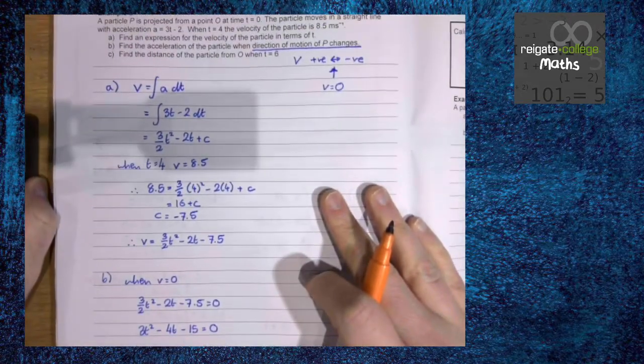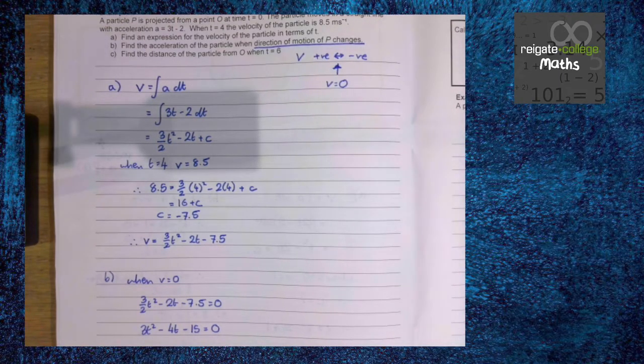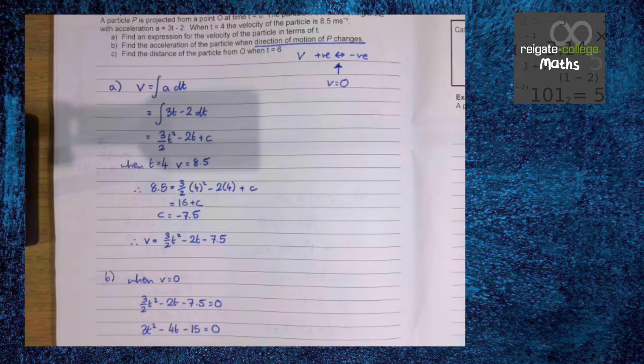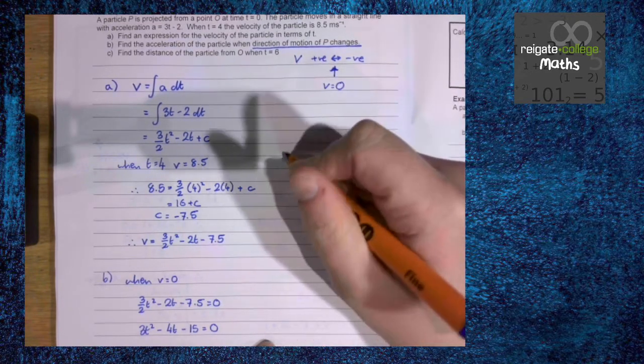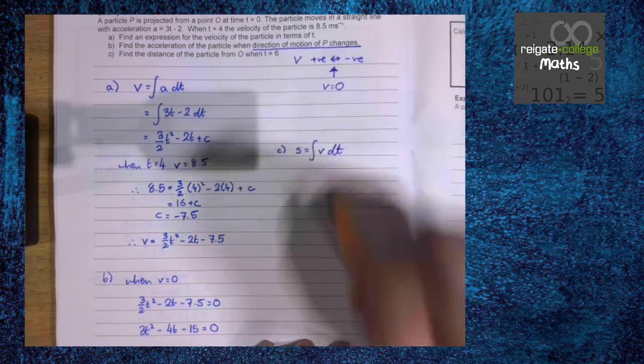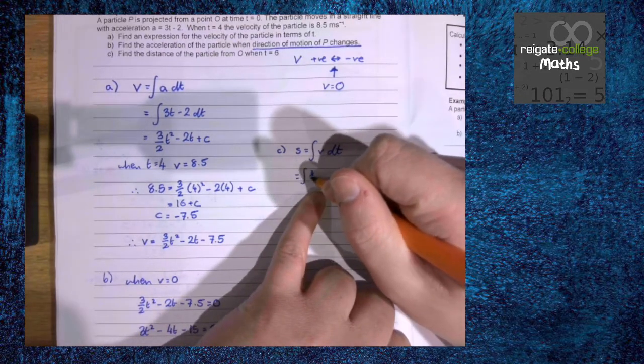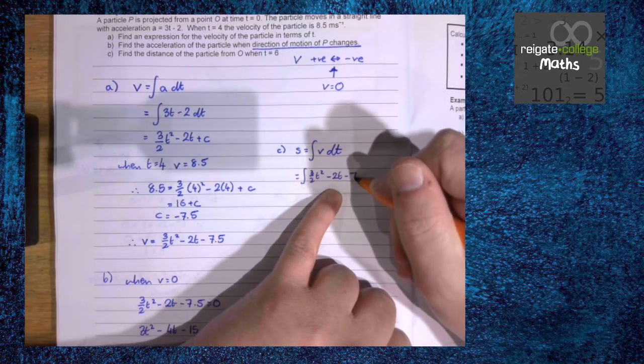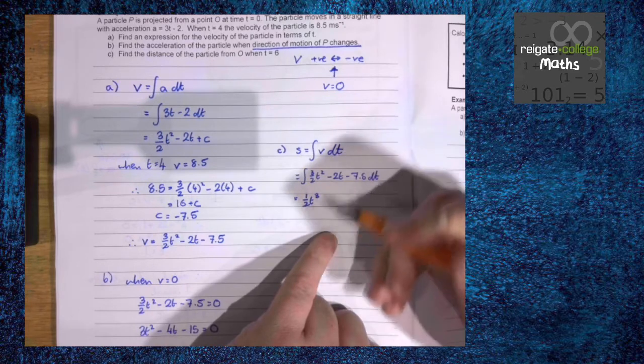Now looking at part c, find the distance of the particle from O when t is 6. So in this case, we're not finding the area under the curve. That is the distance traveled, or displacement traveled. Here, we are finding the coordinate of s when t is 6. We know that s is the integral of v. So unlike the previous example, we're not doing limits. We are going to find our expression in terms of t, with a plus c on the end. Find the plus c, then put in t is 6.